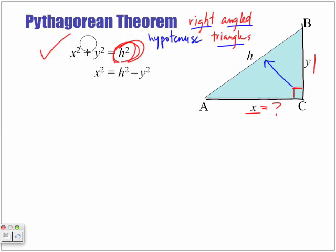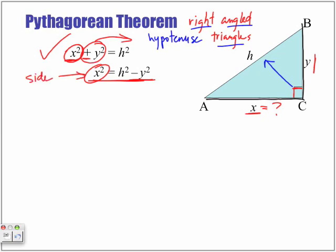And so notice how the equation here changes. What I've done is I've isolated for x squared by moving this positive y squared over to the opposite side of the equal sign. And notice here, on this side of the equal sign, it's a positive y squared. When we move it across the equal sign, it becomes minus y squared. So we use this equation if x is the side we need to find, the side that is considered unknown.